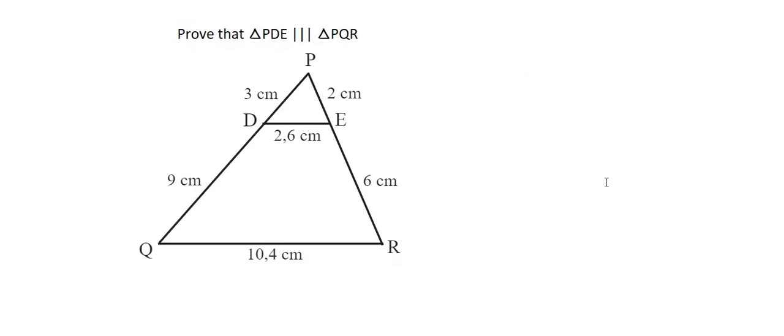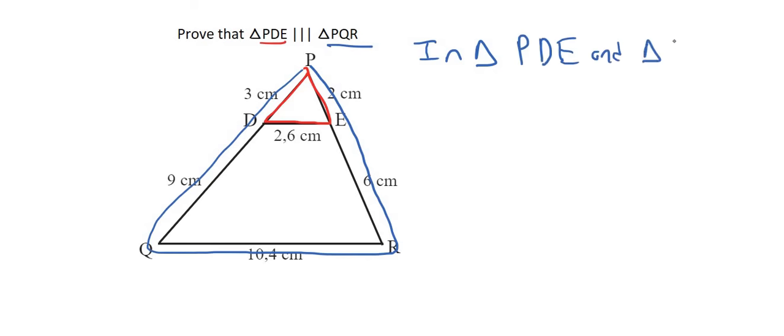And so the last question for this lesson is the following. Prove that triangle PDE, so this is the small one here in red, is similar to PQR. Now guys remember there are only two ways to do similarity: either using angles or sides. Clearly this one is going to use sides. So we start off by saying in triangle PDE and triangle PQR. And now we need to use sides. Now my hint would always be to just use the letters that they give you. So because we're using sides now you can't just say P. That would be an angle. So you're going to look at PD.